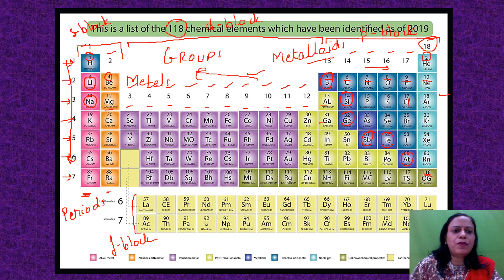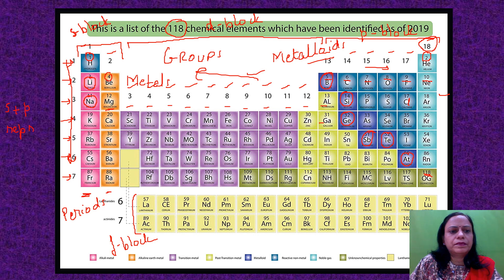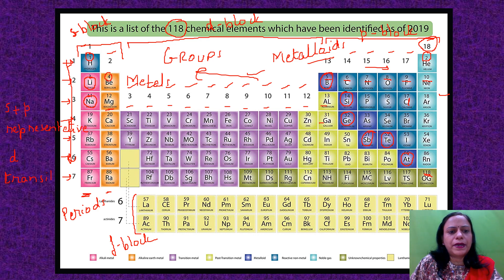Collectively, the S-block and P-block together are known as the representative elements. The D-block forms the transition elements, because they show a transition in properties from metallic to non-metallic. The F-block is known as the inner transition elements.